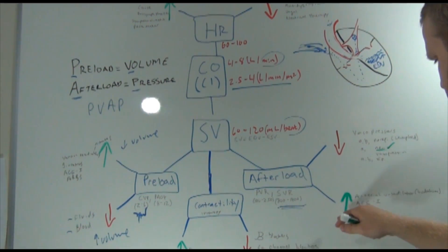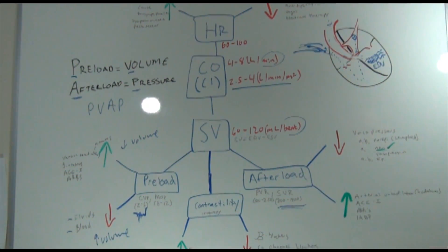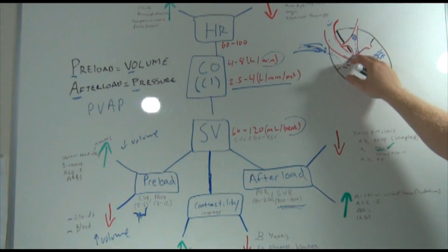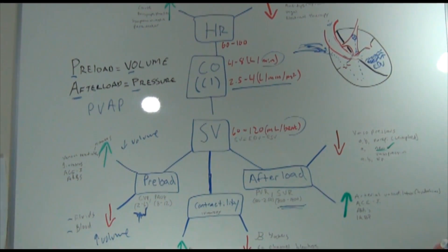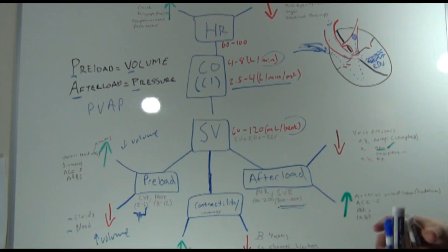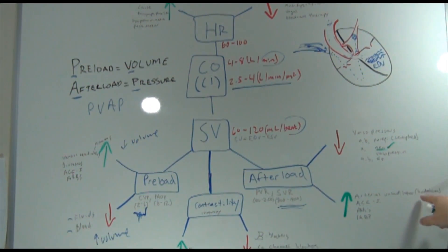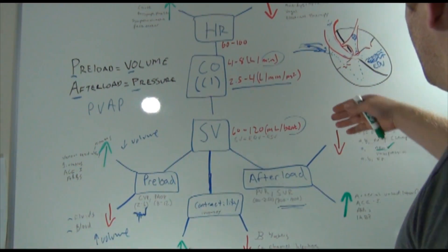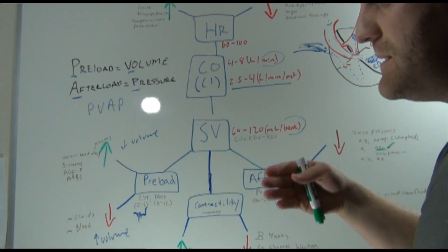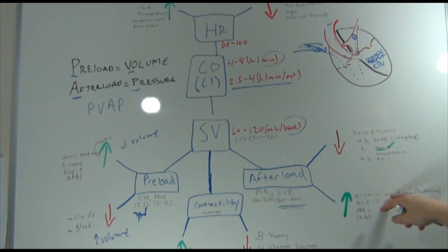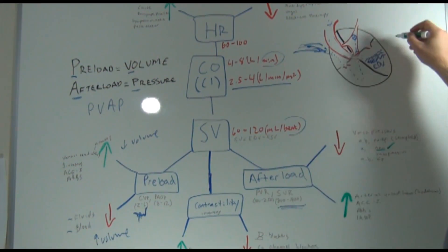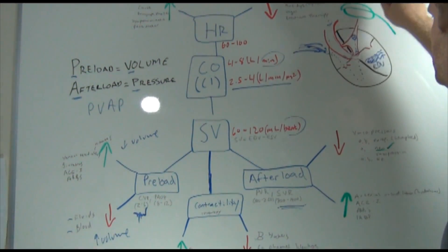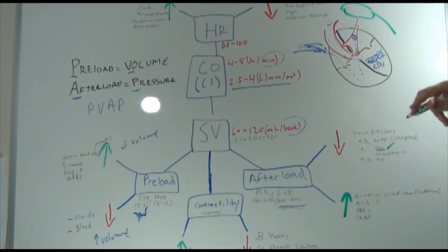If afterload is too high — if the ventricles are working too hard to push blood into the aorta — we use arterial vasodilators like hydralazine to dilate the arteries and ease blood flow. We can also use ACE inhibitors, ARBs, and intra-aortic balloon pumps — a balloon fed up into the aorta that inflates and deflates to assist perfusion.